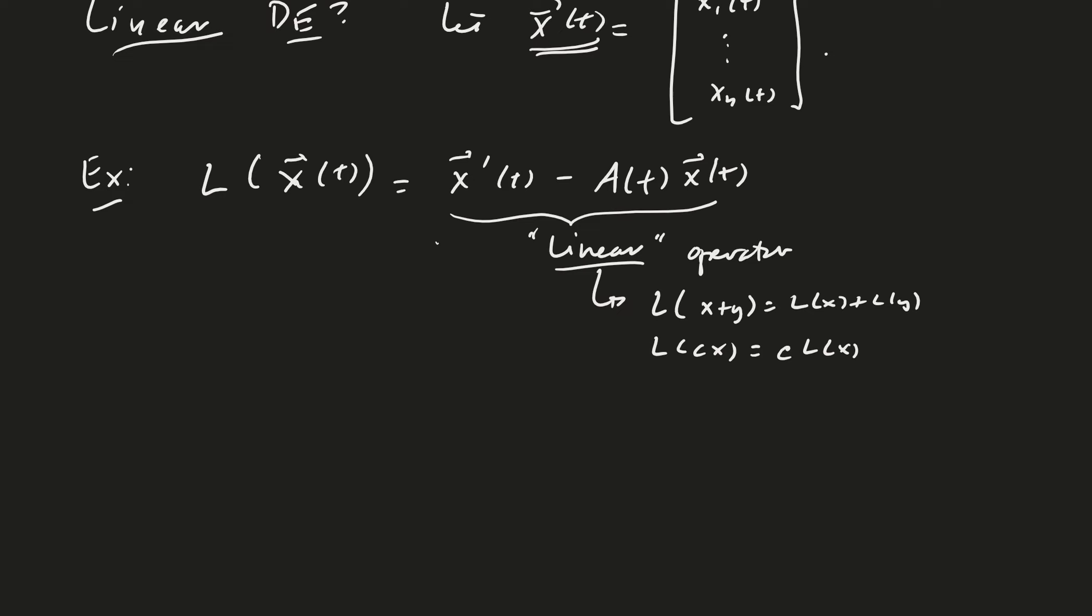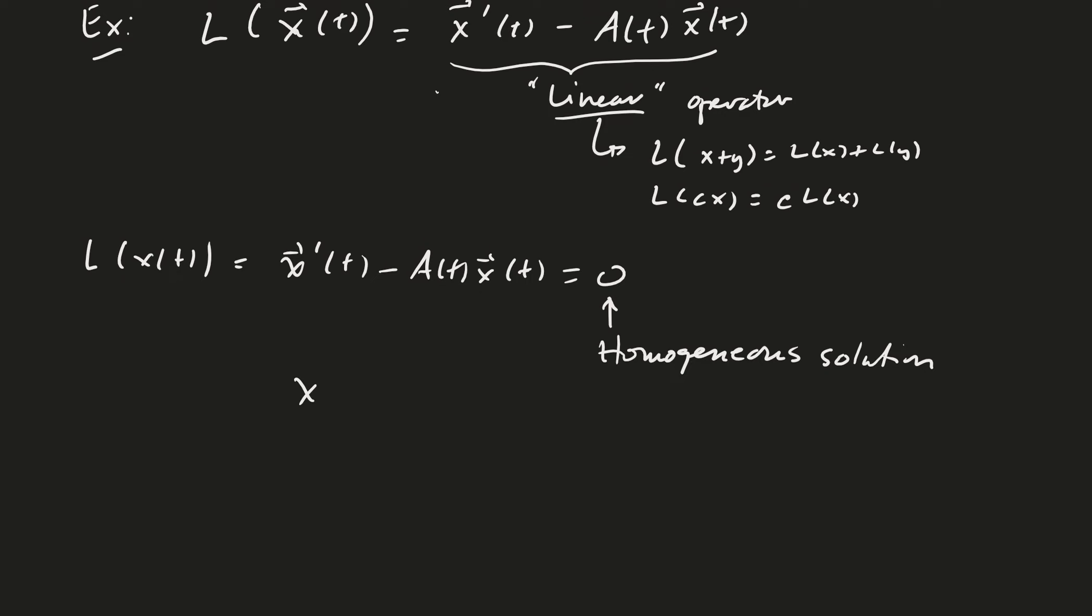So then the differential equation, which is L of x of t, we could call it that way, x prime of t minus A of t times x of t. When we set it equal to 0, that means we're looking for the homogeneous part of the solution or the homogeneous solution. And then if we take x prime of t minus A of t times x of t equals some function of t.